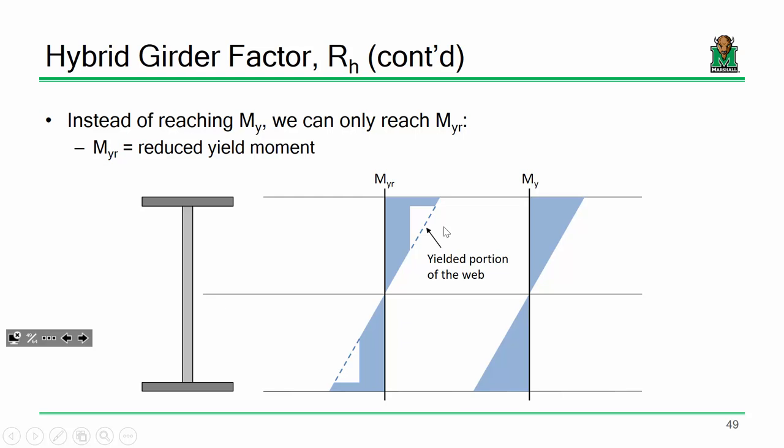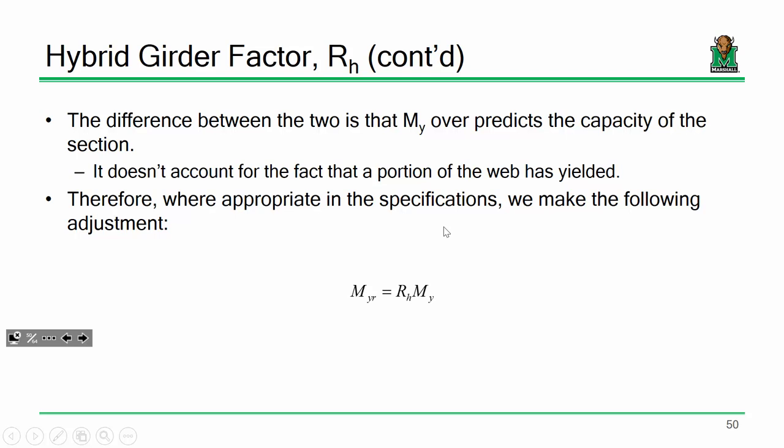One of the issues with a hybrid girder is the way that it yields. Let's say I've got a beam with flanges and web shaded differently — say 70 KSI steel for the flanges and 50 KSI for the web. What happens is I can't really reach the full yield moment. If I hit 70 KSI right here on the top flange, I've already blown through a little bit of the web in yielding. I've already lost a little bit of that capacity. So instead of reaching the full yield moment, we can only reach a reduced portion because some of the web has already yielded. The ratio of that reduced yield moment to the full yield moment is what we call a hybrid girder factor.